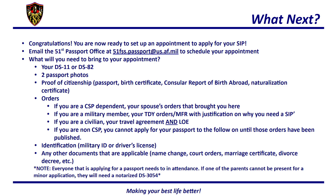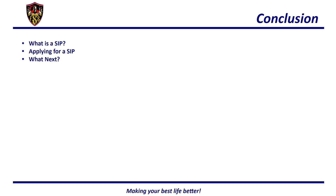We will also need identification such as a military ID or driver's license, and any other documents that are applicable, such as name change documents, court orders, marriage certificate, divorce decrees, etc. Please note, everyone applying for a passport needs to be in attendance. If one of the parents cannot be present for a minor application, they will need a notarized DS-3053. In conclusion, you should now know what a SIP is, how to apply for a SIP, and what the next step is once you have your application.